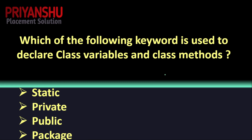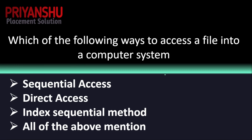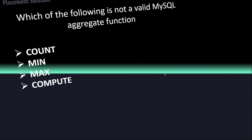The next question: which keyword is used to declare a class variable and class method? The keyword is public. Moving on — which of the following are ways to access a file in a computer system: sequential access, direct access, or index sequential method? The correct answer is all of the above — sequential, direct, and index sequential are all valid.